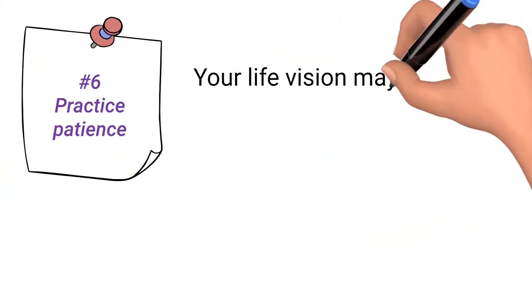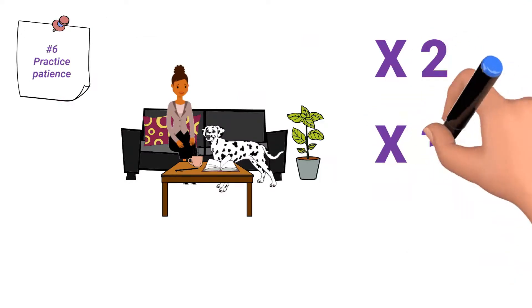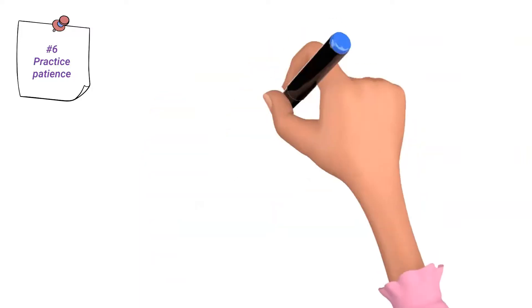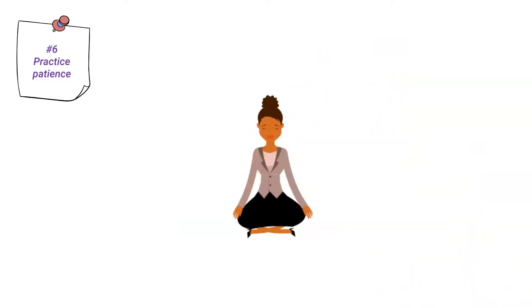Number 6: Practice patience. Your life vision may not be obvious at first. You may need to plan multiple sessions to accomplish this task. Not everyone is a born musician, athlete, or doctor. It may take longer than you anticipated, but patience will support you in reaching your goal.